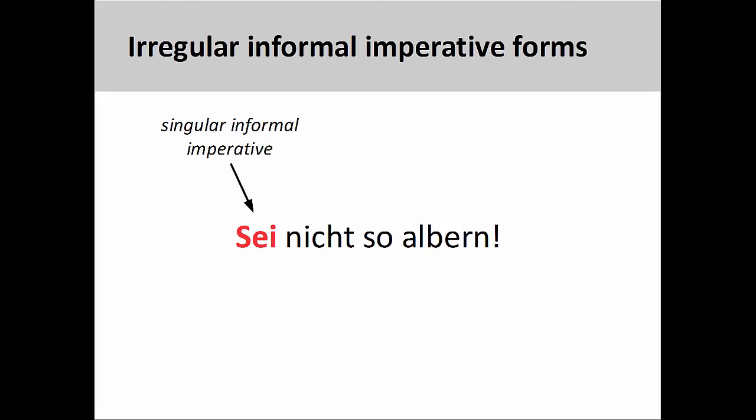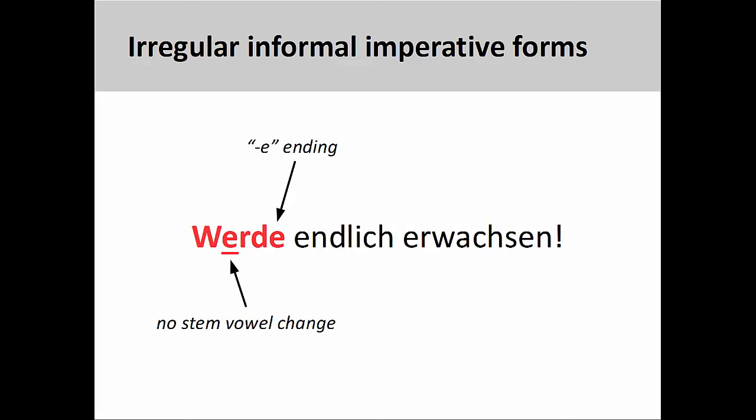Finally, there are some irregular informal imperative forms to be aware of. The most common one you will use is the singular informal imperative of sein, meaning to be. For example: sei nicht so albern — don't be so silly. Although werden, meaning to become, does have a stem-vowel change in the indicative mood, this is not present in the singular informal imperative: werde endlich erwachsen — grow up already.